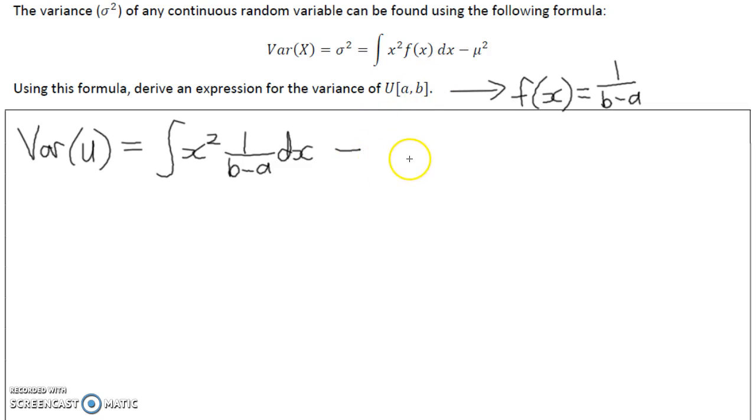And from an earlier video when we found the mean, hopefully remember the mean was a half b plus a, so we're going to take off b plus a all squared over 4.